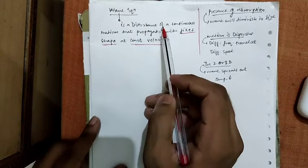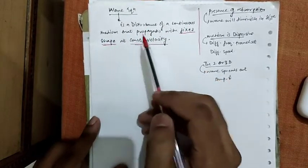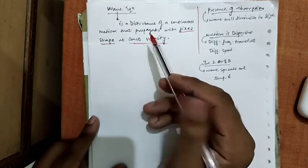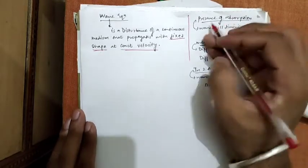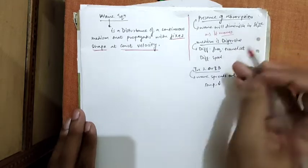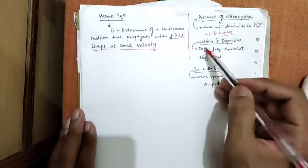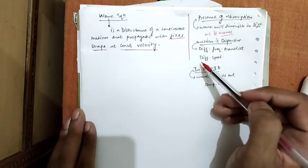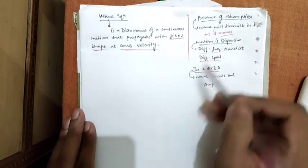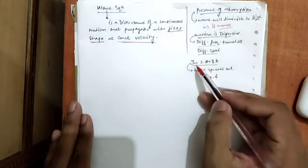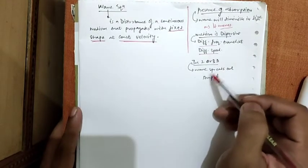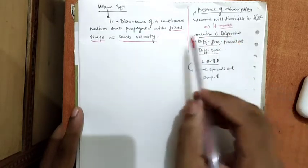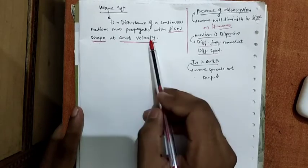A wave is a disturbance of a continuous medium that propagates with a fixed shape and constant velocity. In the presence of absorption, a wave will diminish in size as it moves. If a medium is dispersive, different frequencies travel at different speeds. And if they are travelling in 2 or 3 dimensions, the wave will spread out and its amplitude will decrease with time. For now, we will confine our attention to fixed shape and constant velocity only.